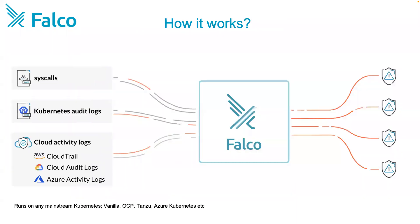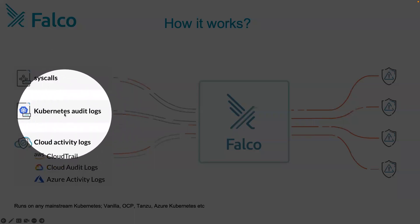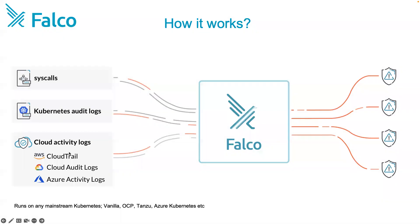How it works: Falco talks to Linux systems via syscalls. It talks to the Kubernetes cluster via integration with the Kubernetes audit logs. For the cloud, it talks via activity logs — for example, AWS CloudTrail, Google Cloud audit logs, or Azure activity logs. It supports all different Kubernetes distributions, including Alibaba Cloud. With the plugin, there is no limitation — you can customize it and write your own plugin to integrate with any other cloud.